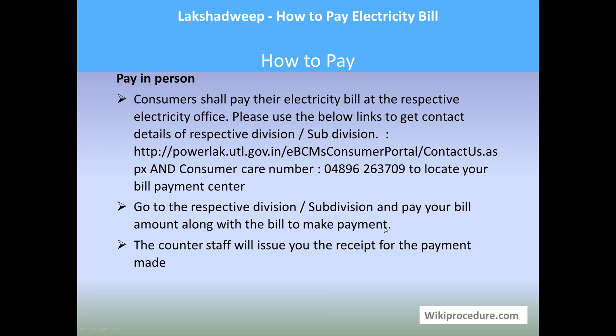A customer care number is also provided, which will be useful for calling to identify and locate the office. Once you have the bill and the contact address, go to the respective division or subdivision office and pay the bill at the respective cash counters. The counter staff, after accepting the cash, will issue a receipt as proof of payment — which you need to keep safe for future reference.